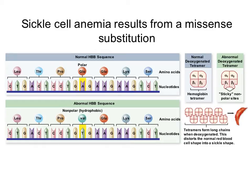Some diseases can be traced back to nucleotide substitutions. Sickle cell anemia is the result of a missense mutation where an adenine was replaced by a thymine. The codon changed from GAG to GTG, and instead of glutamic acid, we now have valine. The main issue is that glutamic acid is a polar amino acid and valine is nonpolar, which changes the way the protein folds, altering its secondary and tertiary structure.